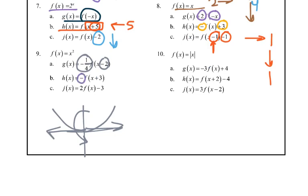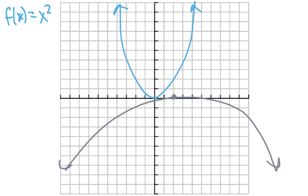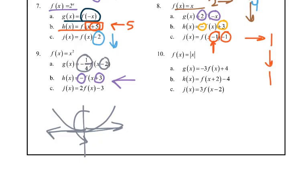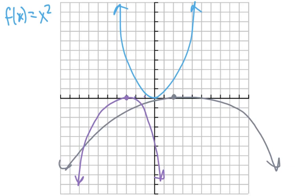Negative again, so we reflect it. This time plus 3 on the inside, so we move it to the left 3 — 1, 2, 3 — and we don't stretch it this time but it is still reflective. And then the last one: we vertically stretch it so it makes it skinnier, and then we just move it down 3 and it's a lot skinnier.